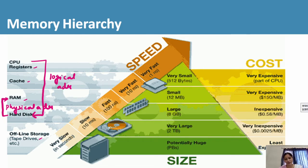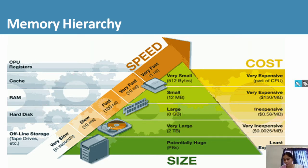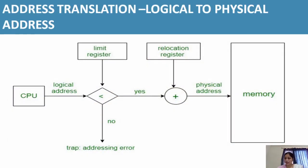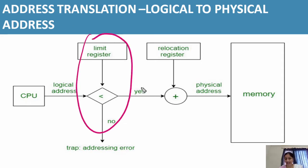Now, how are we going to achieve this? We have covered the what and why parts, and now we will cover the how part — how we are going to make this conversion. The CPU will generate a logical address and, with the help of two registers — specifically the limit register and the relocation register — we will be able to convert this logical address to the physical address. We will be understanding how this conversion occurs using the relocation register, which we will cover in the following slides.